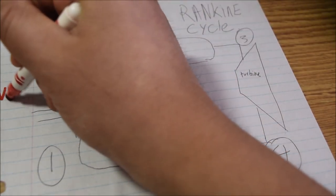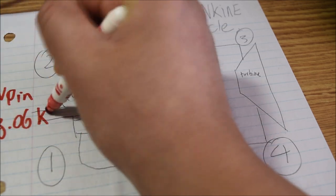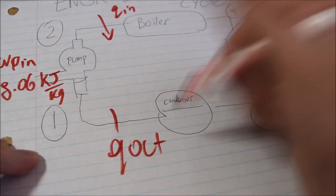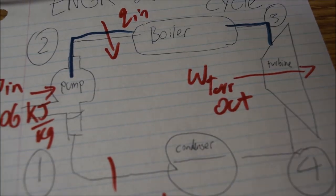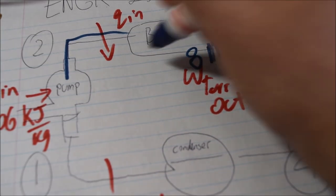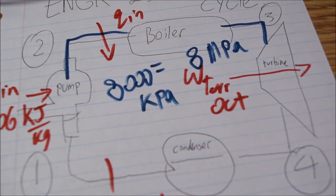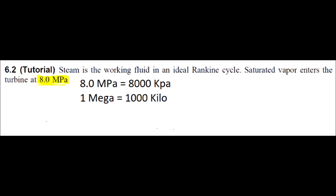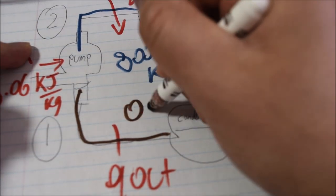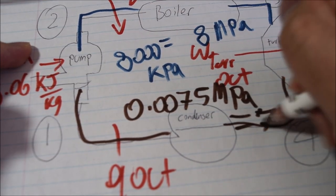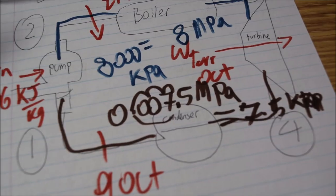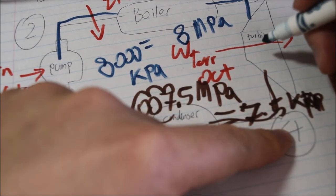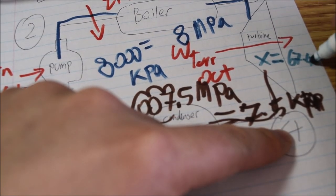From the problem, we know that the work of the pump in is 8.06 kilojoules per kilogram. Q in, Q out, and work turbine out. It is given that the pressure entering the turbine is 8 megapascals, equals 8000 kilopascals. The pressure exiting the condenser is 0.0075 megapascal, or 7.5 kilopascals. It is also given that the quality x equals 67.45%.